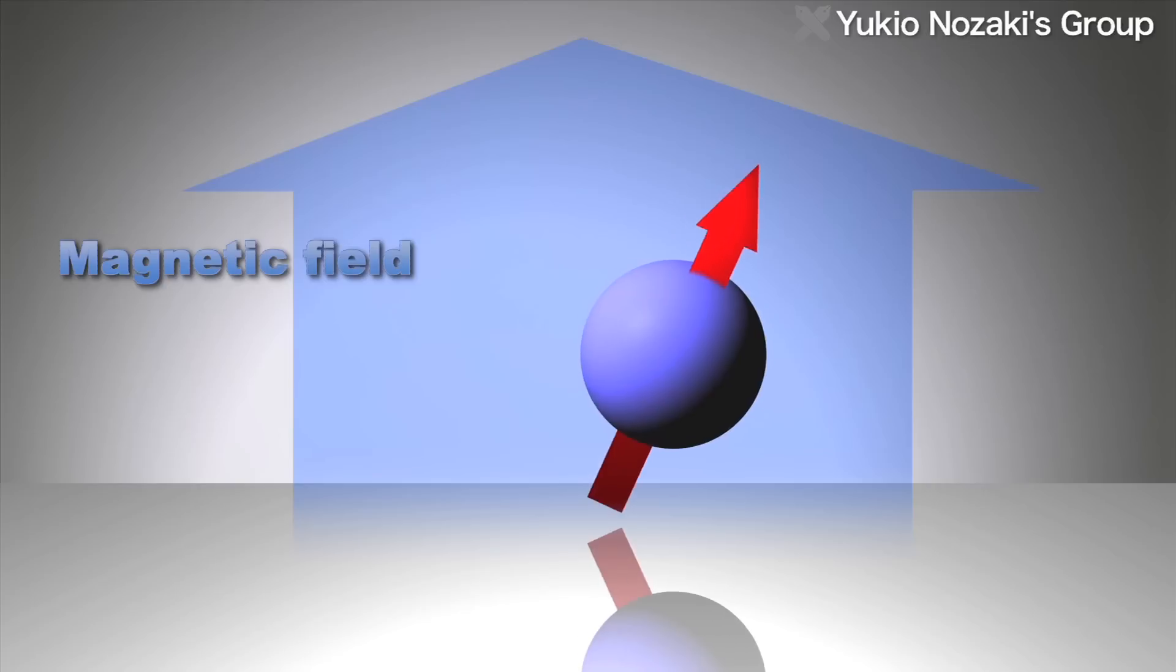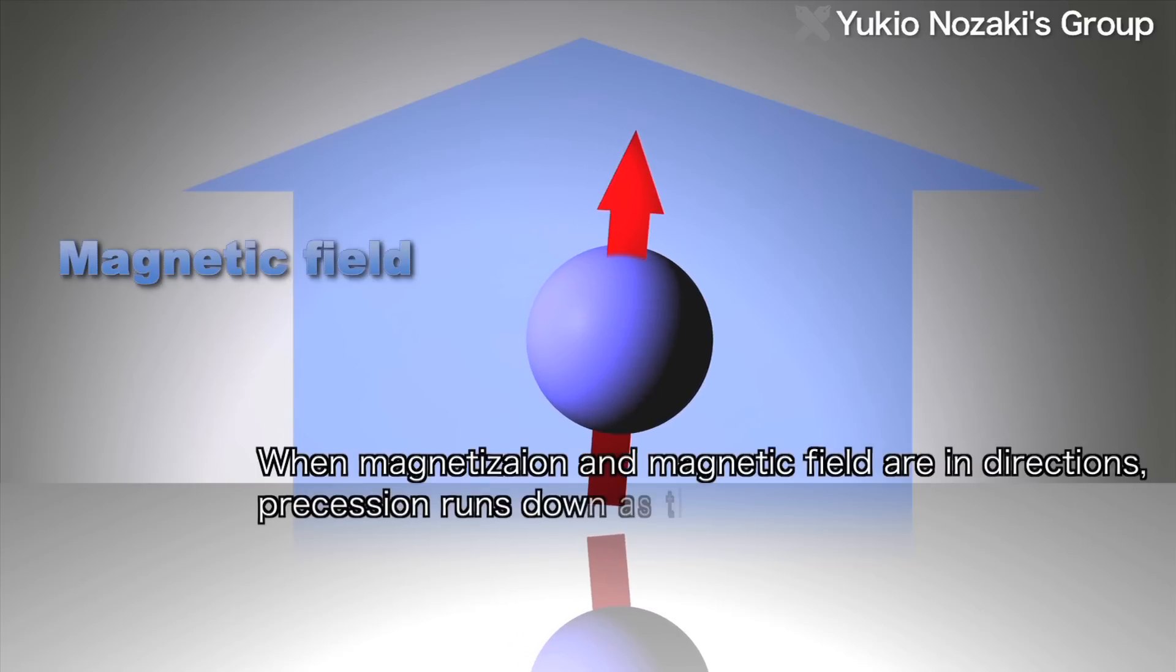However, if the direction of spin is different from the magnetic field's direction, the magnetic energy is raised from the ground state energy. So as time passes, energy is dissipated and eventually the precession runs down.